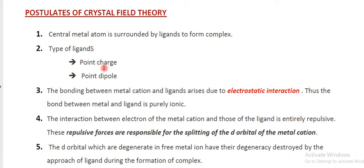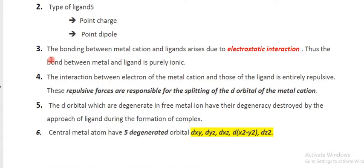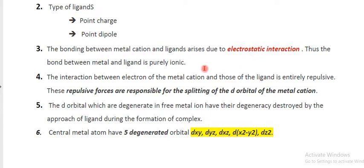The third postulate is that as the ligand approaches the metal ion, the bonding between the metal cation and the ligand arises due to the electrostatic interaction. Therefore, the bond between the metal and ligand is purely ionic, just because it arises due to the electrostatic interaction.